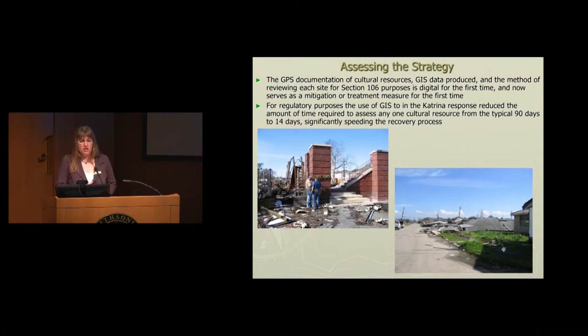In terms of results — did it work? The methods and technology applied meant that this whole Section 106 process was digital for the very first time, and the treatment measures were digital for the very first time. Under the regulations, you have 90 days to go out, survey, determine if something is eligible for the National Register, and determine if there's an adverse effect. Ninety days is an immense amount of time in a disaster. But we were able through this system to get it down to two weeks instead of 90 days, which meant decisions could move faster and building infrastructure could move faster.